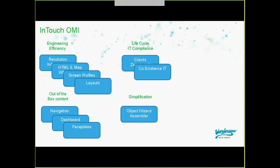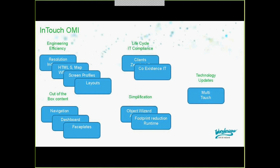InTouch OMI includes simplification through an object wizard assembler — when you add a graphic to a layout or pane, it builds an object in the back end. There is a reduced runtime footprint allowing greater performance. Technology updates include multi-touch — gesture controls, multi-touch swiping, single-touch swipes and selections, pinch and zoom. It is multi-threaded, unlike InTouch standalone and InTouch for System Platform which are single-threaded, providing increased performance.